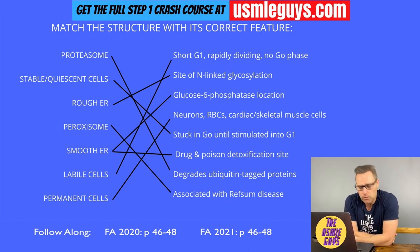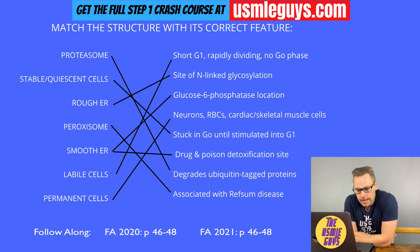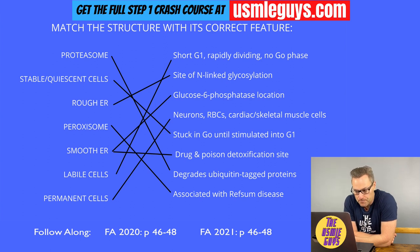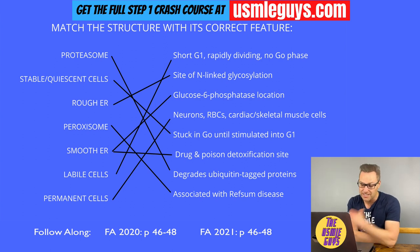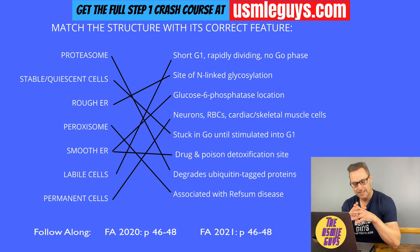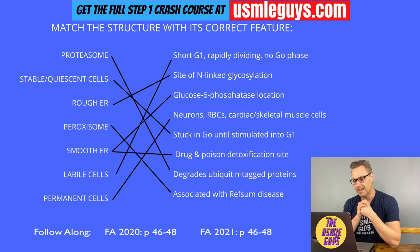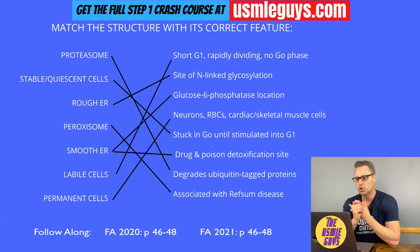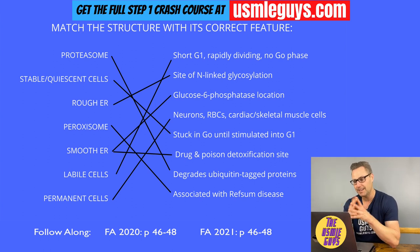Adrenoleukodystrophy is inherited in an X-linked recessive manner. A mutation of the ABCD1 gene causes a defect in beta-oxidation, so very long-chain fatty acids accumulate — specifically in the brain's white matter, testes, and adrenal glands. This leads to progressively worsening adrenal gland crisis, progressively worsening neurological dysfunction, and because these are so dramatic, it can cause death.